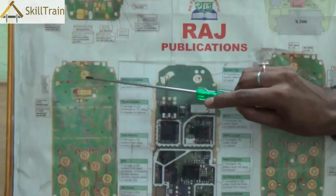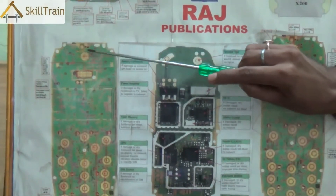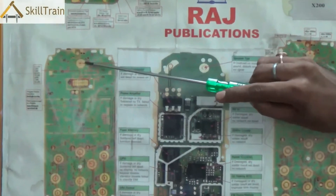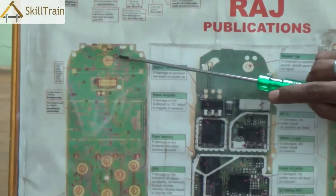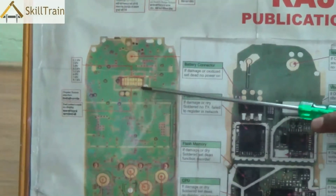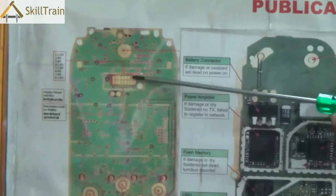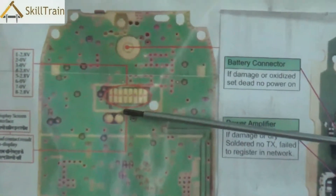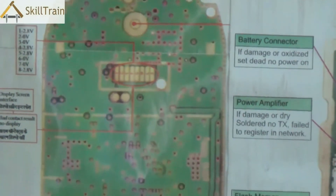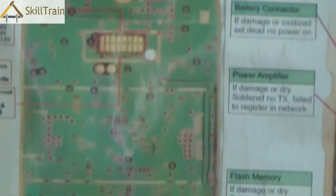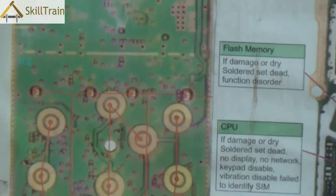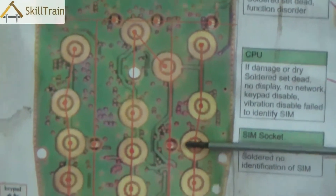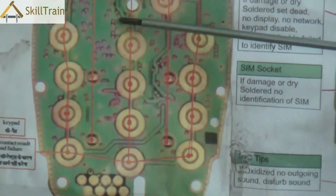The top tip that you see is called the speaker tip. This is where the speaker connects to — the speaker is the device that helps you hear the other person's voice. The next one is a display tip, which is where the display of the mobile connects to. Underneath these is where you have the keypad tips, which is where the number keys or the text keys — the keypad — connects to.